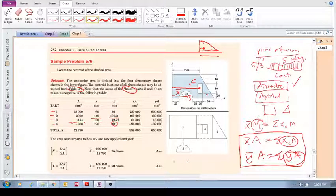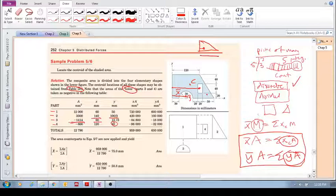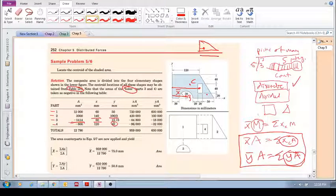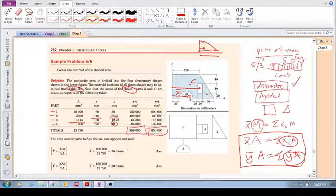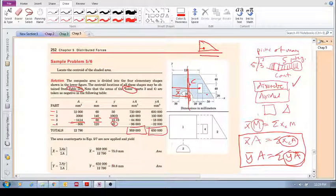Now all you do is, remember, in the X direction it's X bar times the total area is the summation of my XAs. That's what we've done there. And my Y bar is 50.8. So it's going to be somewhere around there. That's roughly where my centroid is of this irregular shape.